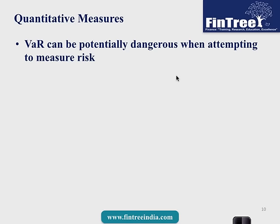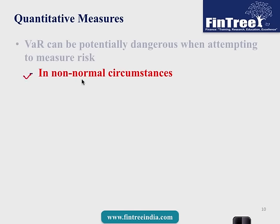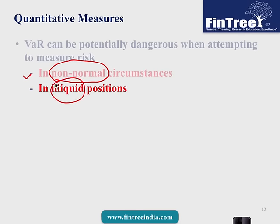Different confidence levels will yield different VAR values. VAR can be potentially dangerous when attempting to measure risk in non-normal circumstances. Extreme left-tail events like 2008 — what we call left-tail events — saw data that appeared to behave normally but suddenly exhibited a really large left skew, leptokurtic behavior, meaning large losses in illiquid positions over a long period.